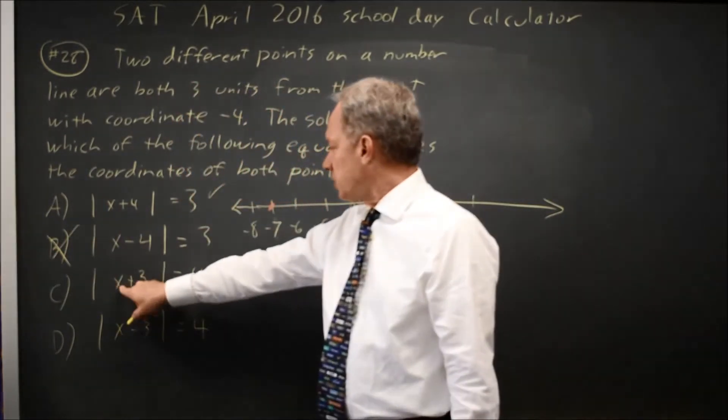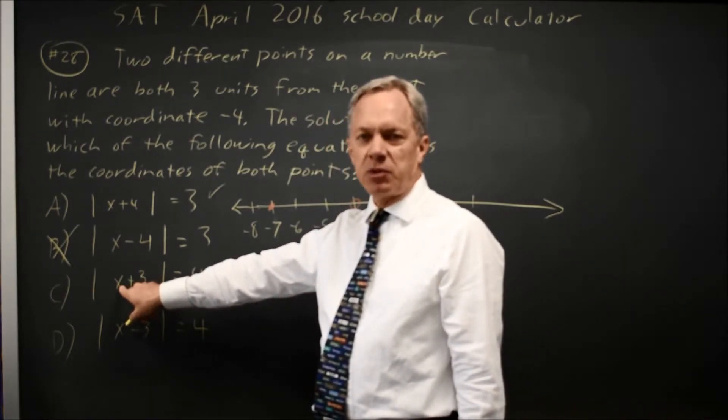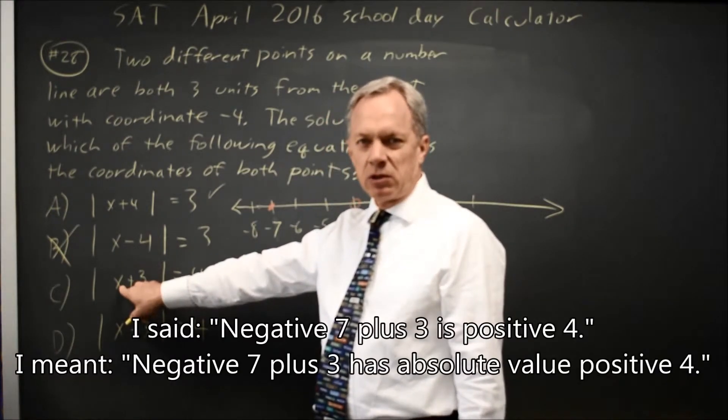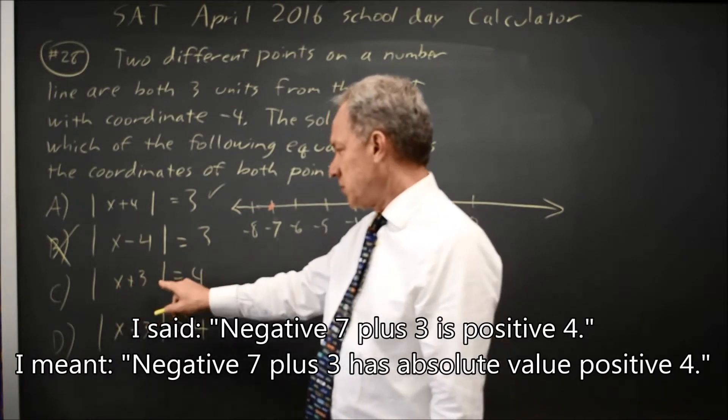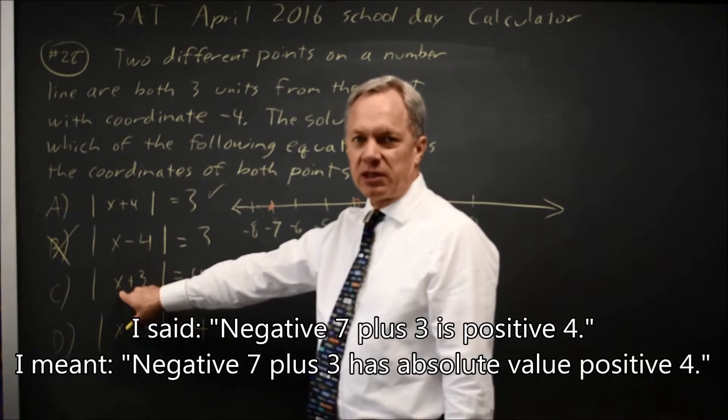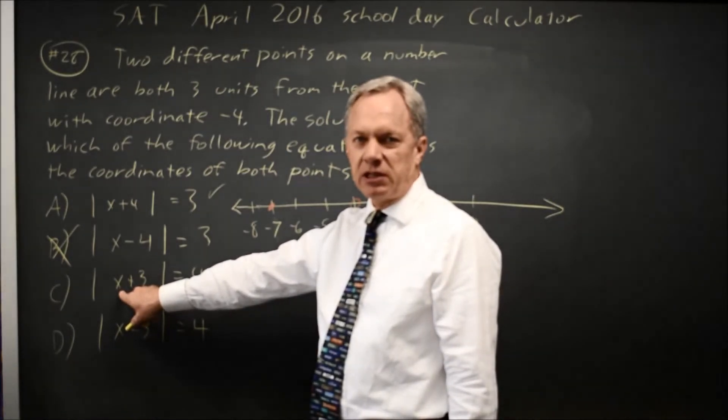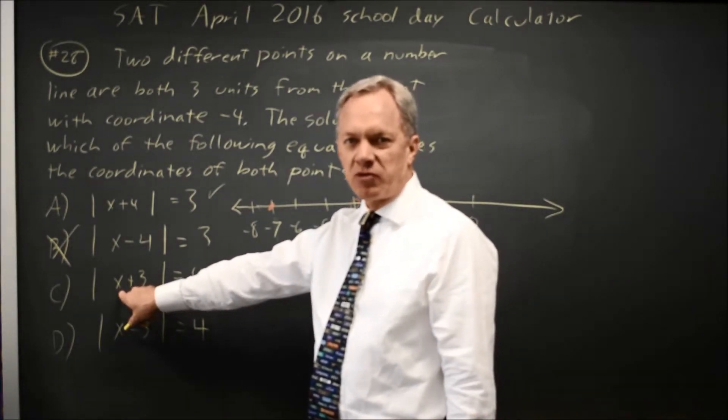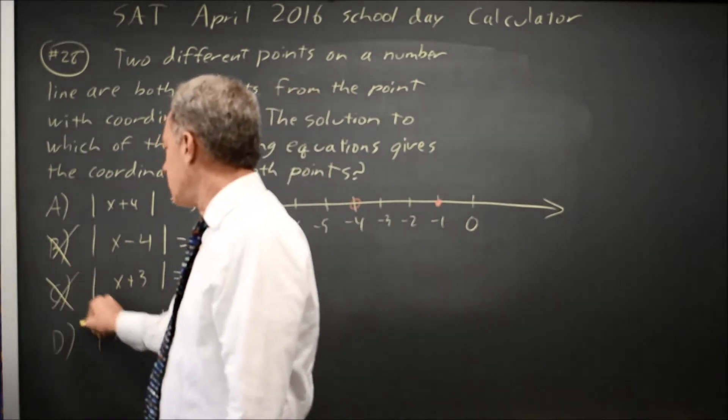Here if I try negative 7, negative 7 plus 3 is positive 4, which does have absolute value 4. What about negative 1 plus 3? Negative 1 plus 3 is positive 2, which has absolute value 2, which is not 4, so that did not work.